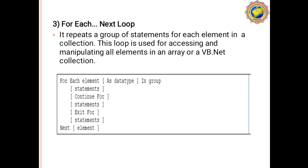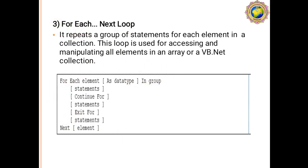Here is the syntax for the For Each Next loop. First, write: 'For Each element As DataType In group', then the statements, then 'Continue For', then more statements, then 'Exit For', then once again a statement, and finally 'Next'. The element is a declared variable, and each element is also declared as a variable with a given data type within the group.